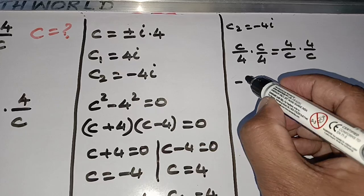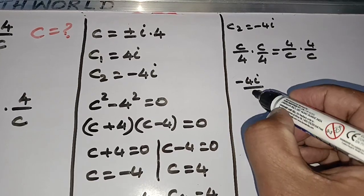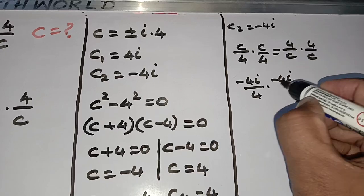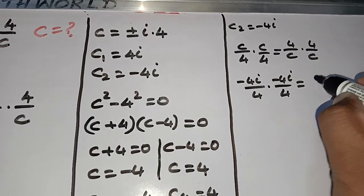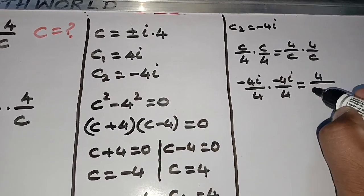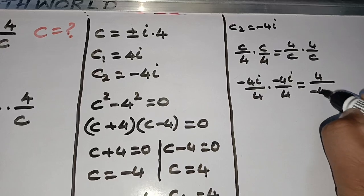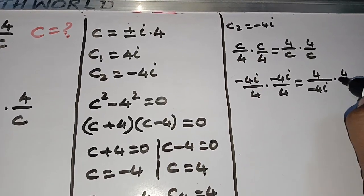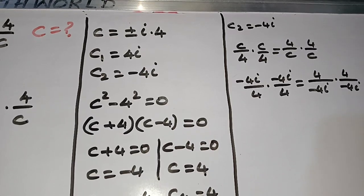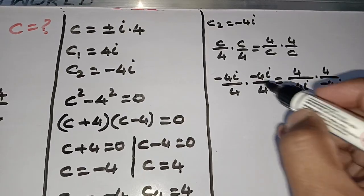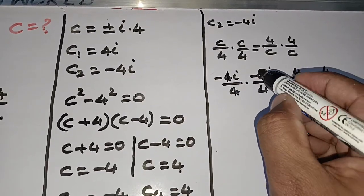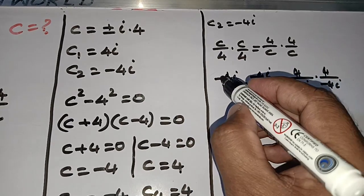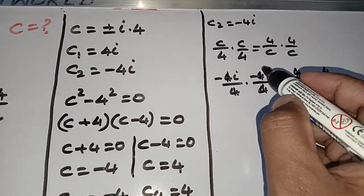Substituting: -4i/4 times -4i/4 equals 4/(-4i) times 4/(-4i). Cancelling 4 and 4 on the left, and on the right side, minus of minus is plus.